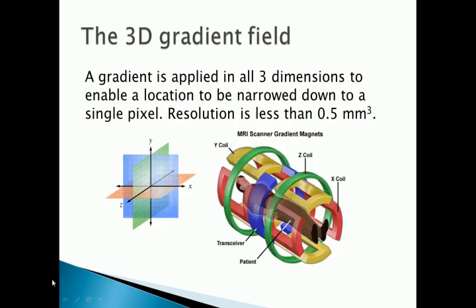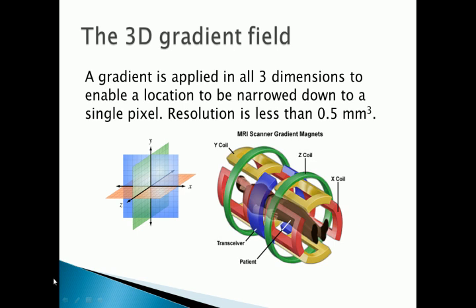It's even more sophisticated than that, because the gradient field operates in three dimensions — there are magnets to control the field in the x, y, and z directions. So you get a three-dimensional image, and you can localize the signal in each of those three dimensions. If you do that all at once you can get localization down to a single pixel, and modern MRI machines can reduce pixel size down to a resolution of less than half a cubic millimeter — which is why you get such fine detail in MRI images.